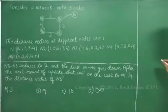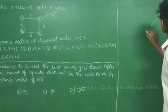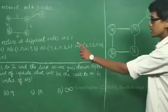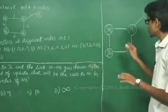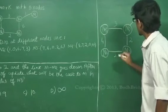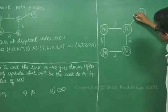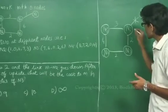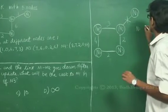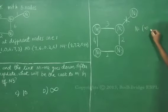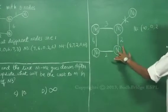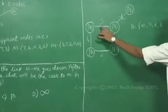Looking at the new graph with N1, N2, and N3: N2-N3 is 2, N1-N5 is 4, N2-N5 is 3, and N3-N4 is 2. The link between N1 and N2 has gone down. N2's updated distance vector will be: N2 to N1 is infinity, N2 to itself is 0, N2 to N3 is 2, N2 to N4 is 2+2=4, and N2 to N5 is 3.